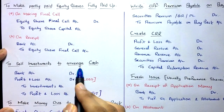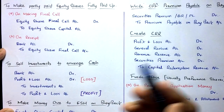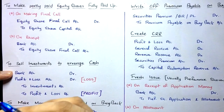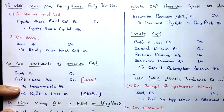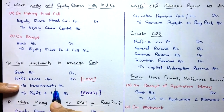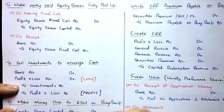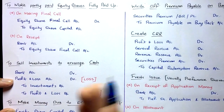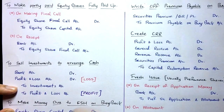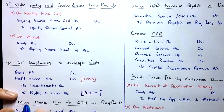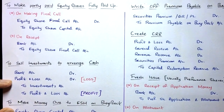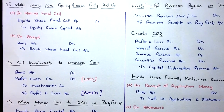Another entry that can come is selling of investments to arrange cash. The entry is: debit Bank Account, credit Investment Account — since investments are going out and assets reduce on credit. If investments are sold below book value, that's a loss — debit Profit & Loss Account. If sold above book value, that's a profit — credit Profit & Loss Account.